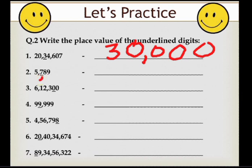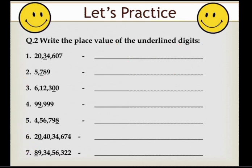The second underlined digit is 7. How many digits are on its right-hand side? There are 2 digits, so we write 2 zeros after 7. We solve all questions the same way. The third underlined digit is 0. Remember: whenever you find the place value of 0, do not consider its position — your answer is always 0.